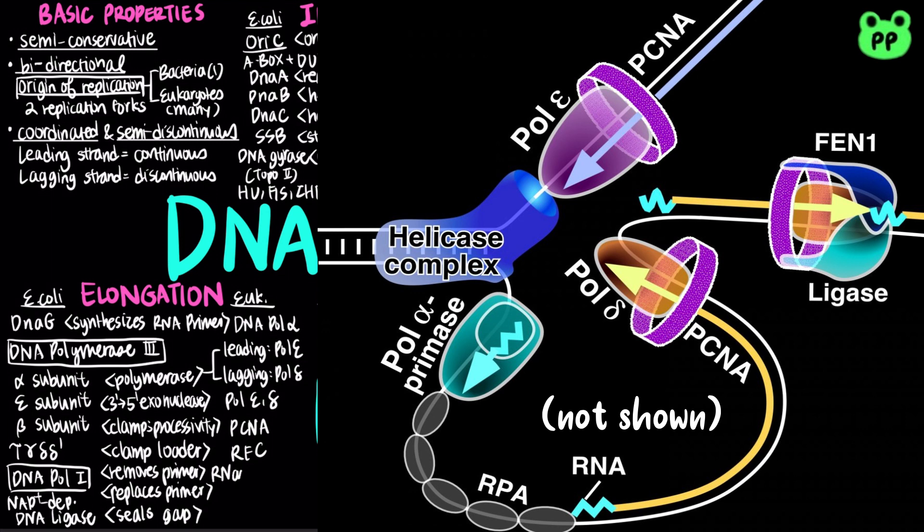The RNA primers are removed by RNase H, and replaced with DNA by DNA polymerase alpha. In eukaryotes, small amount of DNA segment upstream of RNA primer is also displaced, creating a flap structure which is removed by flap endonuclease 1, or FEN1. The nicks are sealed by DNA-dependent DNA ligase.